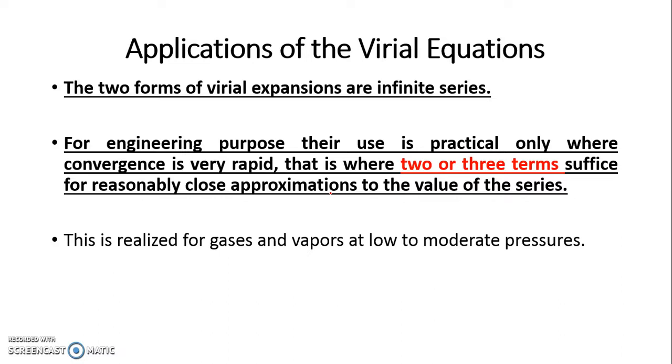Z equals 1 plus b dash p plus c dash p square is more than sufficient, or z equals 1 plus b by v plus c upon v square. Generally we do not go beyond third, but if it is a linear equation like z equals 1 plus b dash p, it is good. If we can prove that for this region, up to this range of pressure or temperature, we can use z equals 1 plus b dash p, which is a linear equation, then we can use that Virial Equation in a much easier way. This is realized for gases and vapors at low to moderate pressure that we do not need to go beyond third parameter.